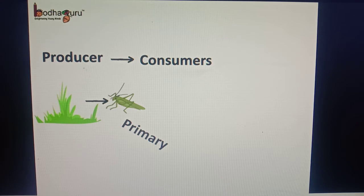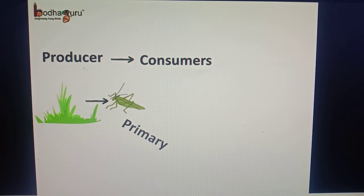The herbivores eat the plants. They consume the plants directly, so they are the primary consumers. For example, the grasshopper eats the grass, so we can say the grasshopper is the primary consumer.